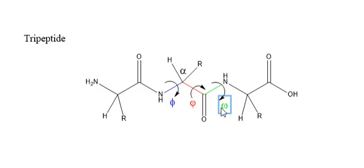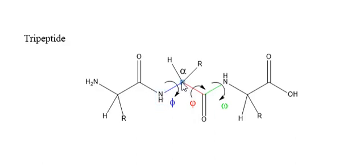Now after knowing what phi, psi, and omega are, we are going to draw a Newman projection whenever it is given with these angles. In a Newman projection, the dot indicates the front atom and the ring indicates the back atom. Here, nitrogen is the front atom and alpha carbon is the back atom.